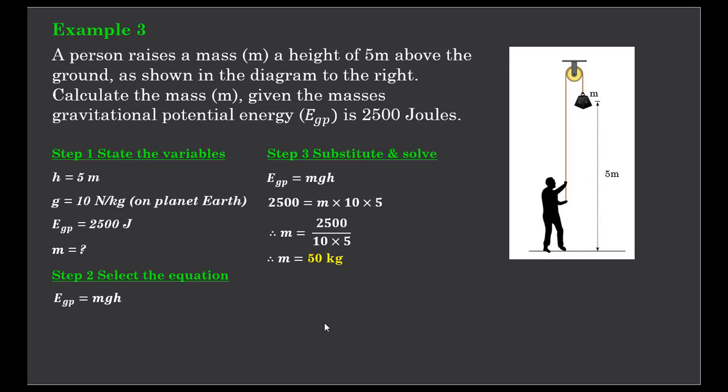I hope these three examples have helped you better understand the gravitational potential energy equation EGP equals MGH, and how we can use it to solve for an unknown quantity. Practice these skills and enjoy your physics. Thanks for watching.